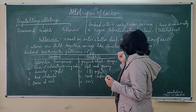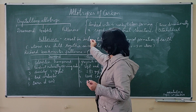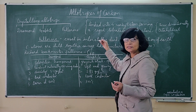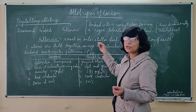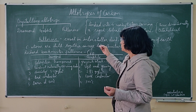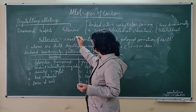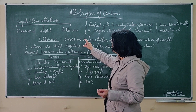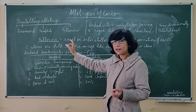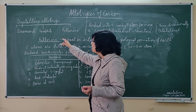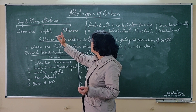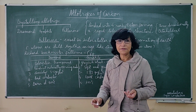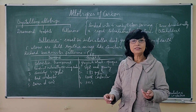Though fullerenes were part of interstellar space and the geological formation of earth — meaning they were existing since long — but we came to know about them only recently. Two crystalline forms of carbon, diamond and graphite, have already been known since ages.